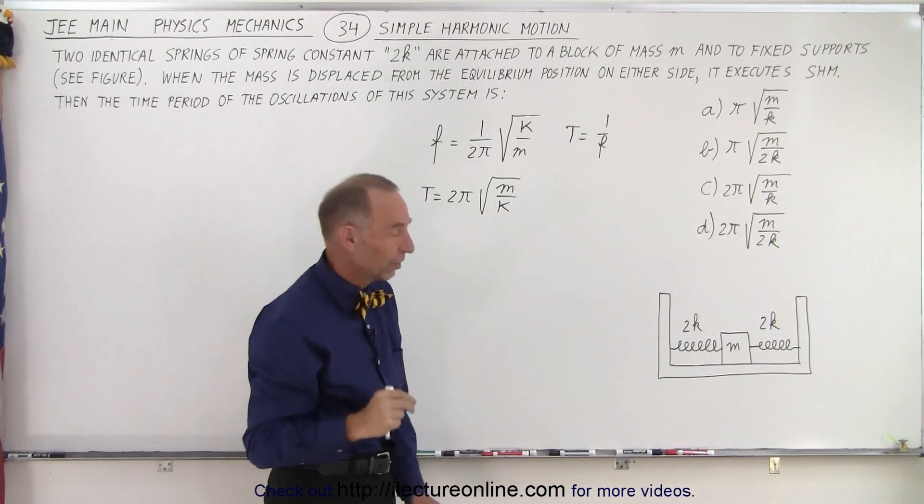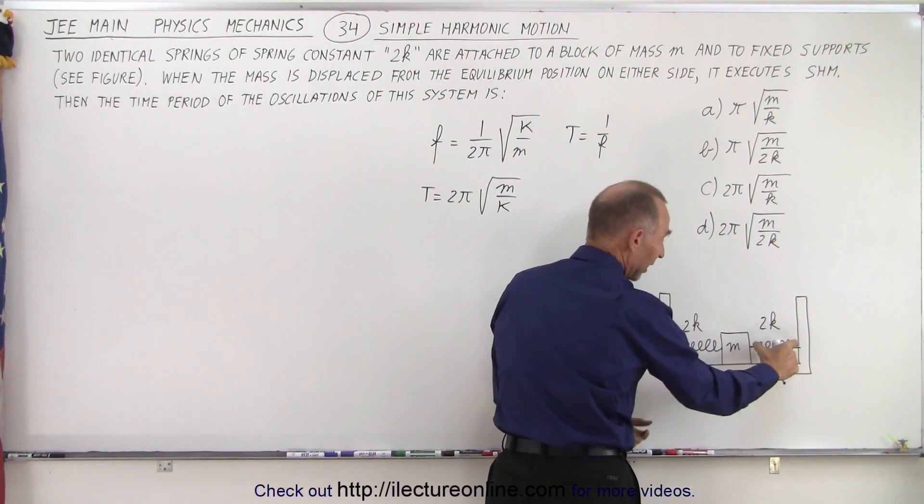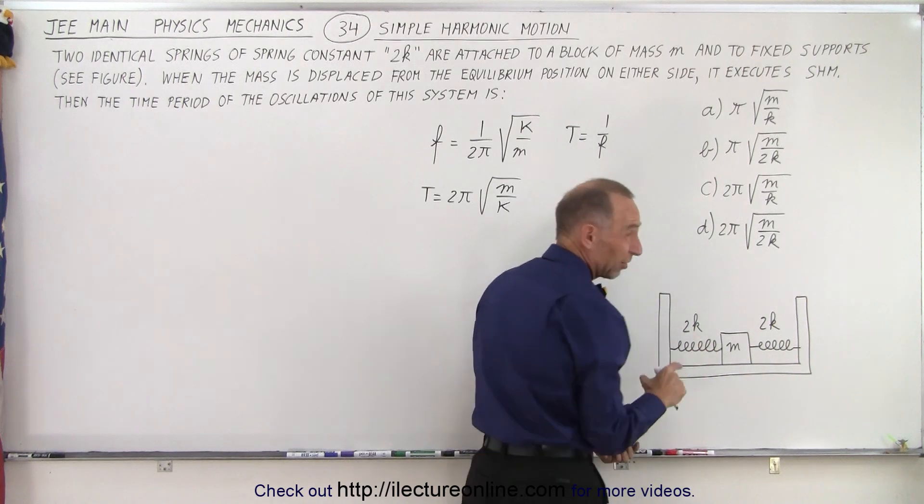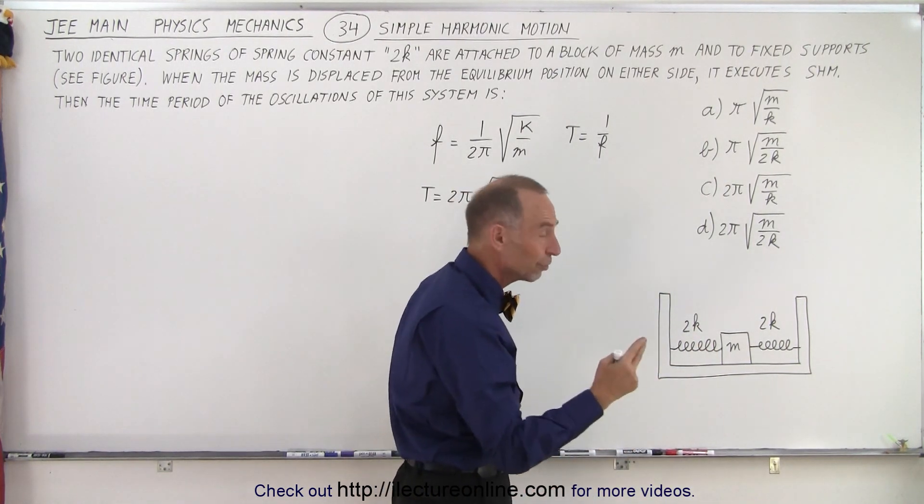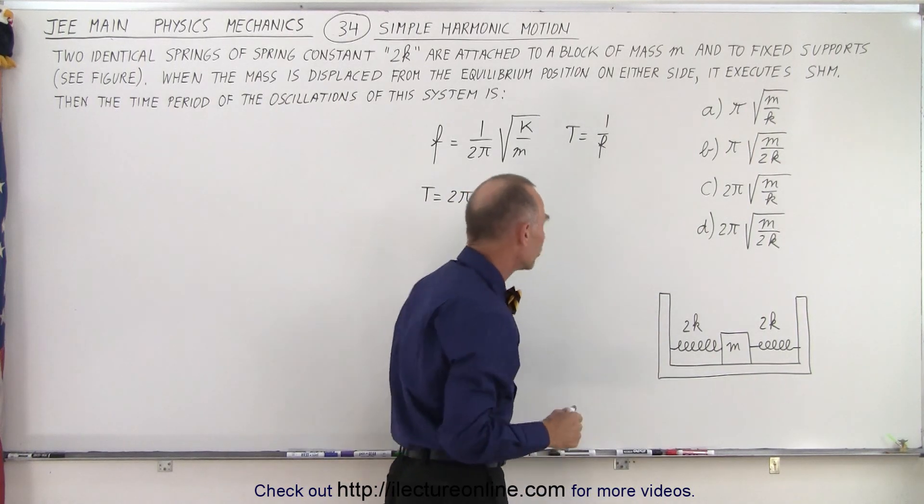Now notice there are two springs. It doesn't matter if one is on either side or both of them are on the same side—it really doesn't matter. We simply have to add up the effect of each of the springs. So there's two of them and each of them has a spring constant of 2k.